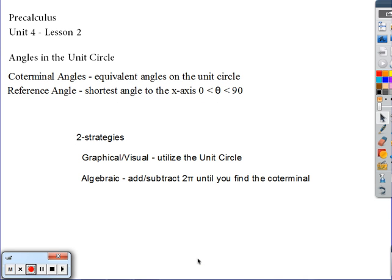Now we're going to be talking about angles in the unit circle. Coterminal angles are equivalent angles on the unit circle. A reference angle would be the shortest angle on the x-axis. It's going to be between 0 and 90.